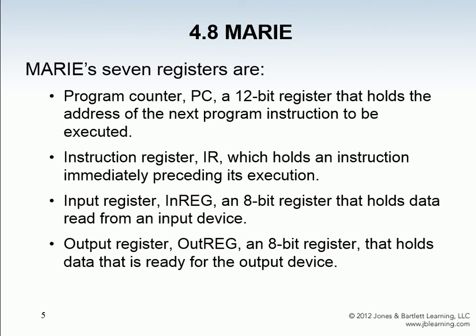The instruction register, the IR, is the instruction that's currently being executed. An address is in the instruction register, the clock ticks, and then the address that was in the program counter immediately goes into the instruction register. It cycles through the different instructions — they go through the program counter and then into the instruction register to be executed.